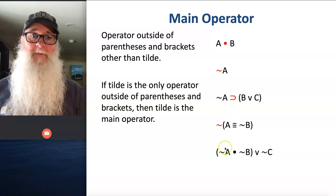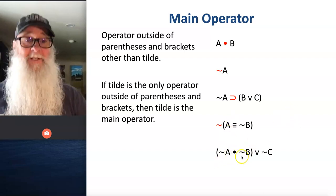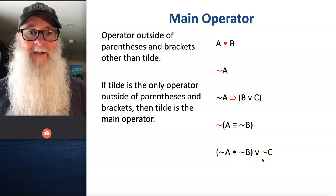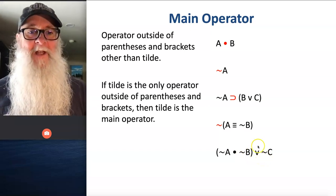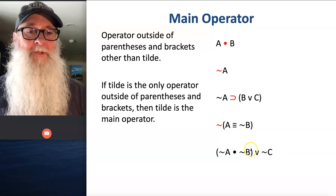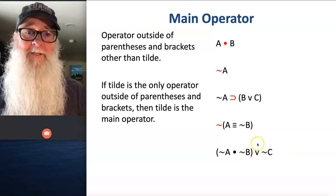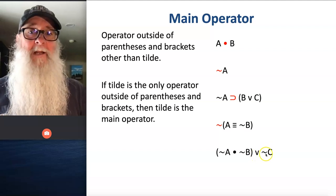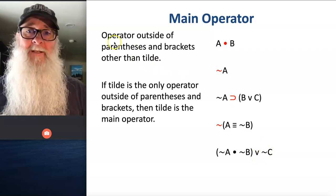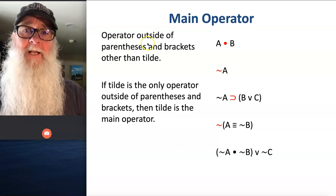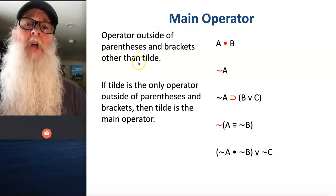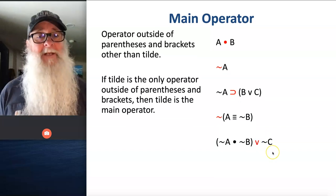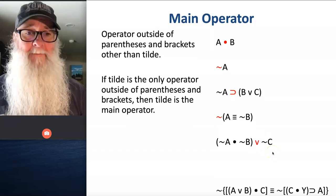Now how about this? We've got a tilde, a dot, another tilde, a wedge, and another tilde. What's the main operator of this statement? We have two operators outside of parentheses and brackets: a wedge and a tilde. But remember what the first rule says — operators outside of parentheses and brackets, other than tilde, are the main operator. So in this case, wedge is our main operator.